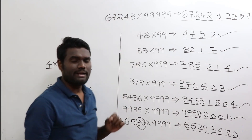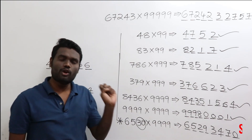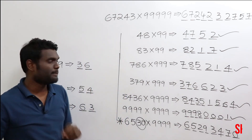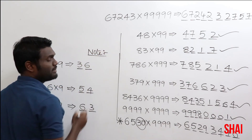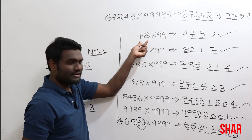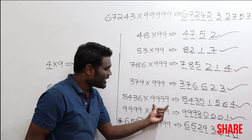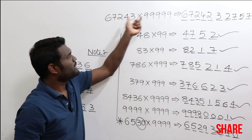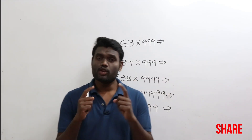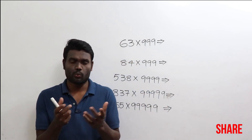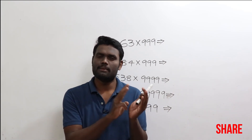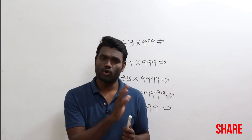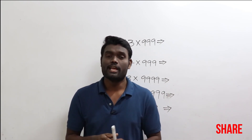All these multiplications can be done in just a fraction of two seconds with this simple and amazing logic with respect to number nine. One important note: this technique works when you multiply double digits with 99, triple digits with 999, four digits with 9999, five digits with 99999, and so on — when the counts match. But what if they don't match?